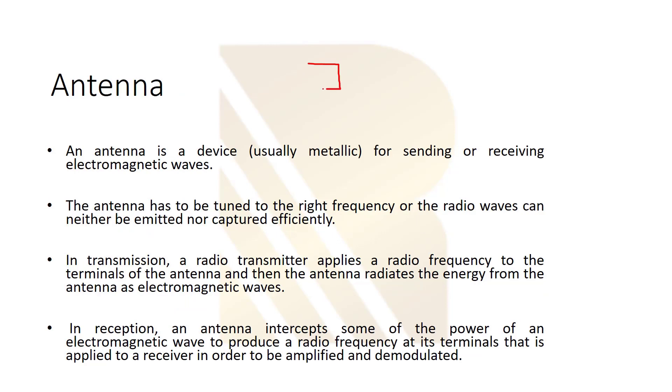So we have a transceiver, TXRX, and we connect our antenna to our transceiver. In transmission, a radio transmitter applies a radio frequency to terminals of antenna. We have voltage and power here. This antenna radiates the energy from itself as electromagnetic wave, and this electromagnetic wave has a radio frequency.